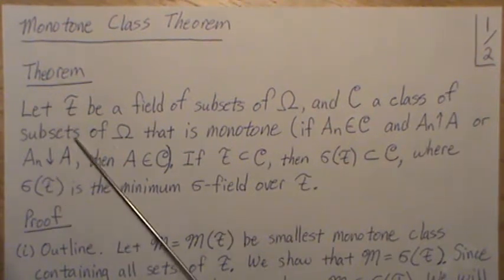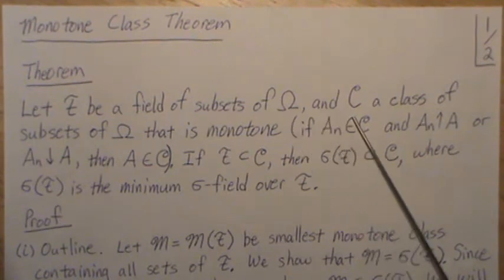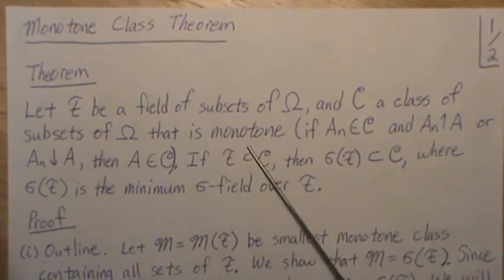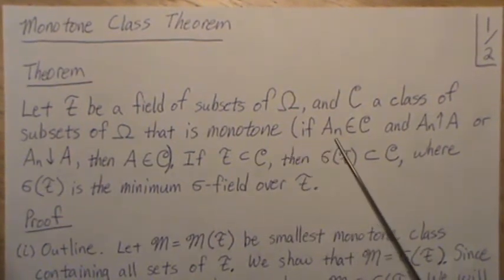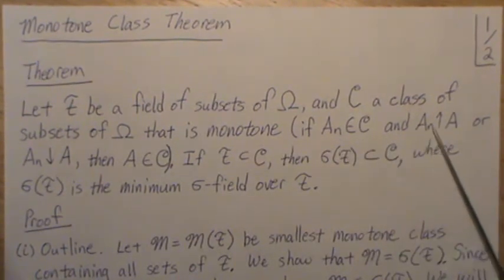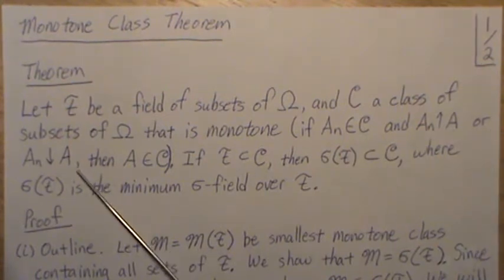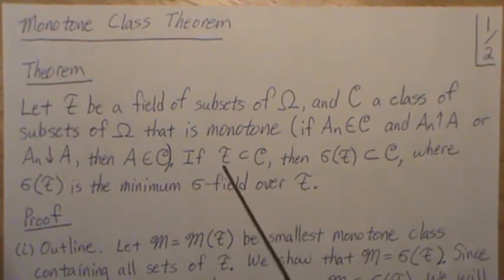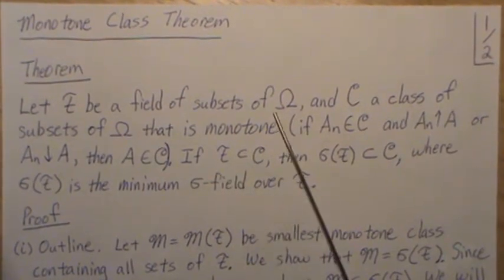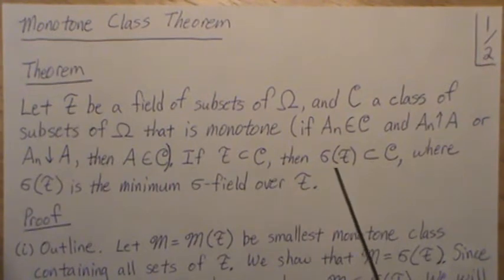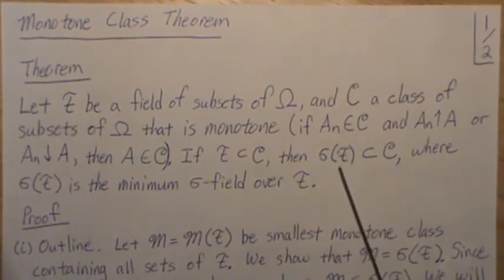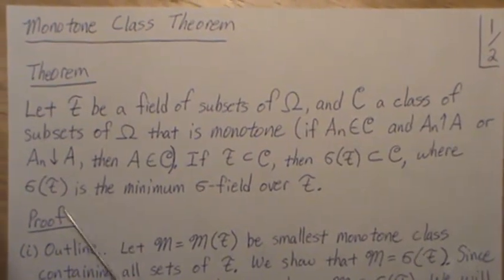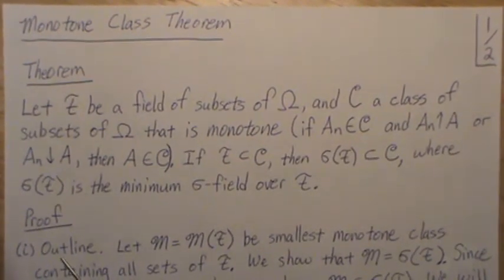The theorem is this: let F be a field of subsets of Ω, and let C be a class of subsets of Ω that is monotone — meaning if Aₙ is in C and Aₙ increases to A or decreases to A, then A also has to be in C. Now if F is a subset of this monotone class C, then the sigma field generated by F is also a subset of C.